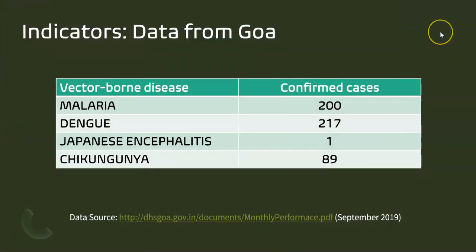With regard to indicators from Goa, these are cases reported as of September 29 available in the public database: malaria 200 cases confirmed, dengue 217, Japanese encephalitis and chikungunya 89.